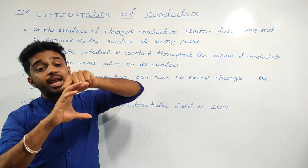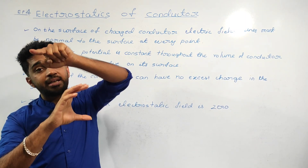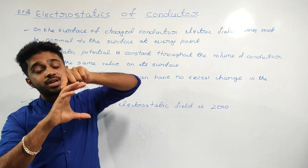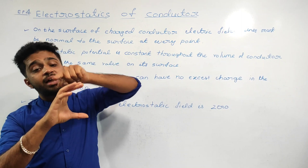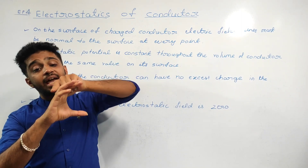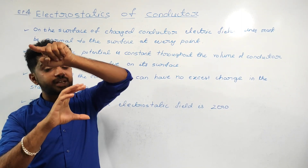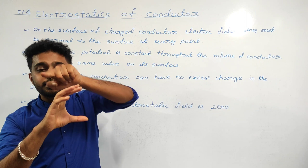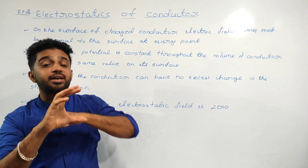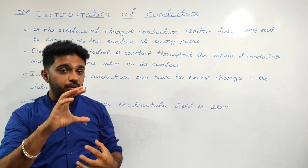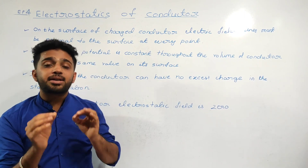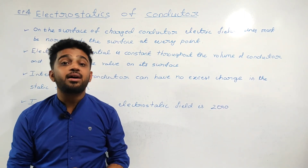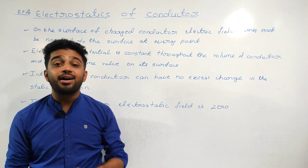The angle between the electric field line — that is, the direction of the electric field line — and the tangent to the surface is 90 degrees. We draw the electric field line normal to the surface of the conductor.